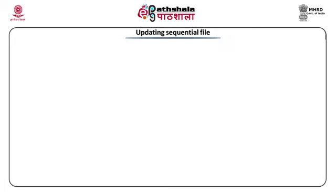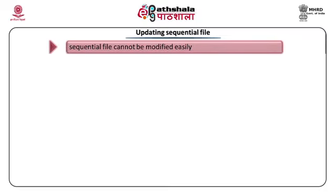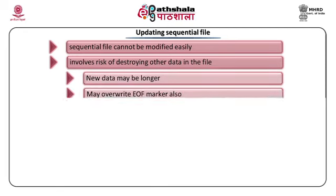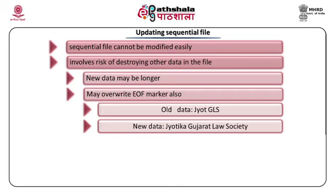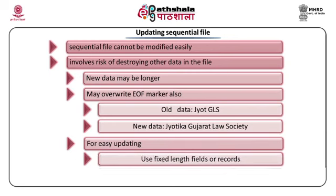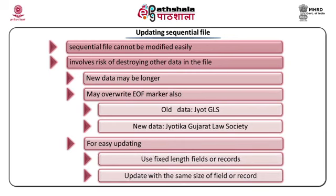Whenever we want to do updates, updating sequential files is not easy because it involves the risk of getting data lost by overwriting. For example, if the old data is "JYOT GLS" and we want to write new data "JYOTIKA GUJARAT LAW SOCIETY" at the same place, the end-of-file marker and any subsequent data may also get lost. So it is not advisable to do updates in the same file. Instead, we should write the updated data into another file, or the best alternative is to use data with fixed-length records for updating.